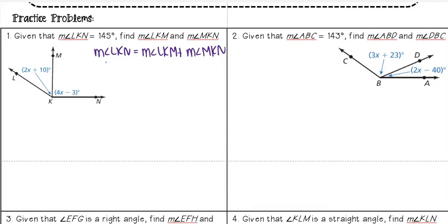Now I'm going to substitute what values I know. I'm told that the measure of angle LKN is 145 degrees, and the measure of angle LKM is equal to 2x plus 10, and the measure of MKN is equal to 4x minus 3. So I have this equation.